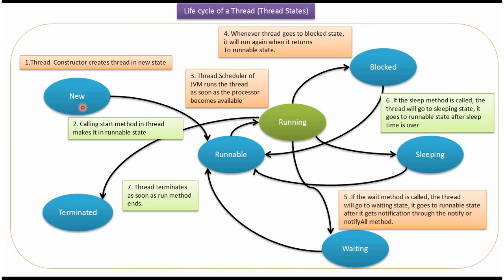When the start method is called on the thread, the thread will go from new state to runnable state. Once the thread is in runnable state, the thread scheduler will pick up the runnable thread and run it. So the thread will go from runnable state to running state.